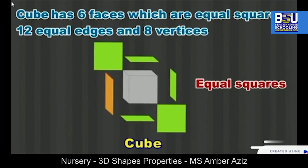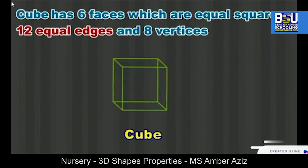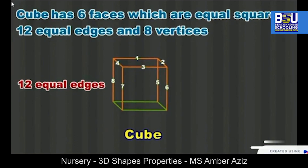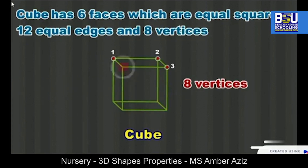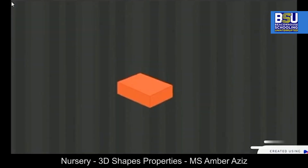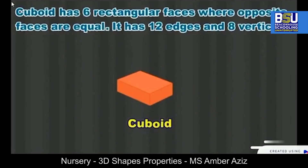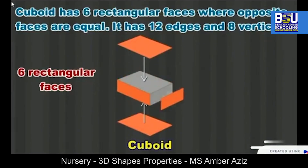A cube has six flat faces which are equal squares. Now let's look at the edges. Edges are the lines where faces meet. A cube has a total of 12 edges. Now I will tell you about vertices — these are the points where edges meet. Can you count? Yes, there are eight vertices.